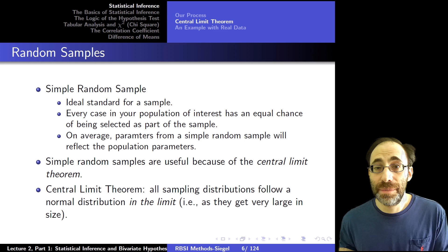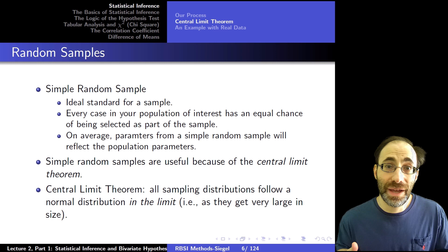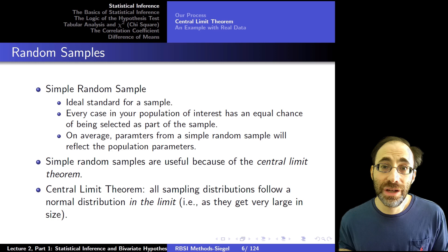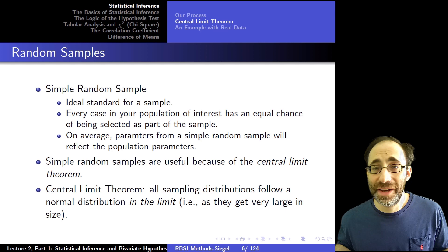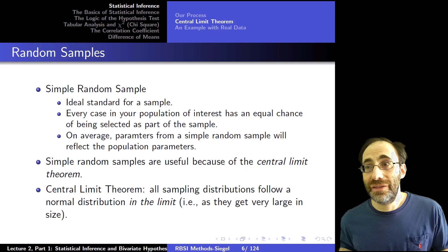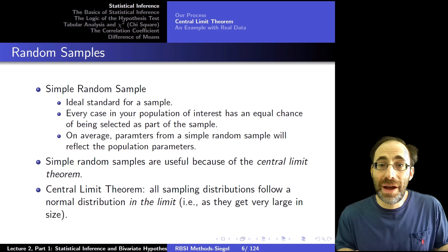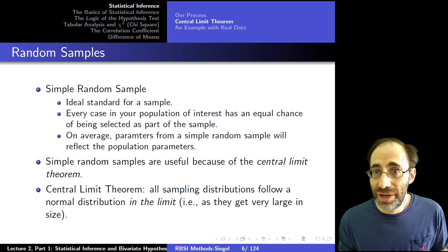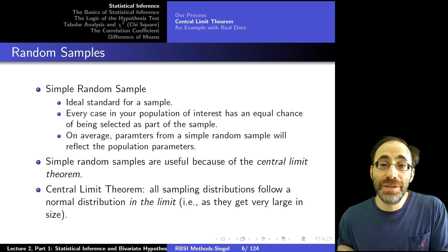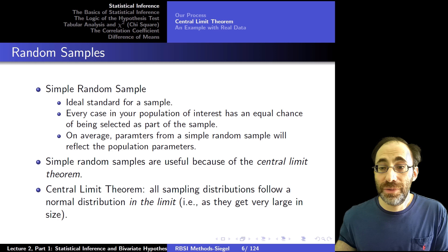The reason simple random sampling is optimal is the same reason randomization is useful for experimental designs — you're averaging over all the possible things that could make responses different. If you choose people at random and the sample is big enough, the sample will have roughly the same mix of relevant traits as the population. On average, the parameters of the simple random sample will reflect the population parameters.